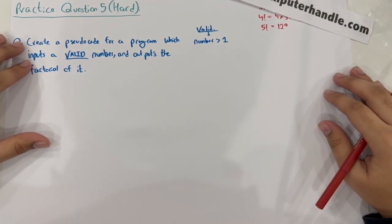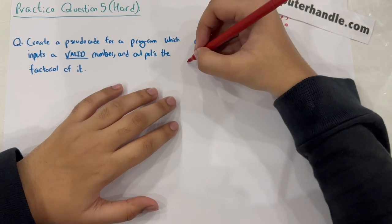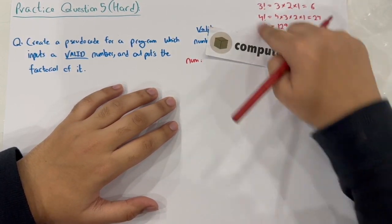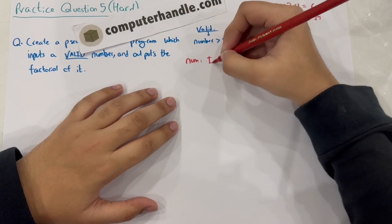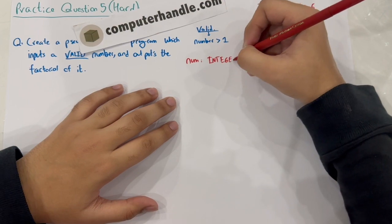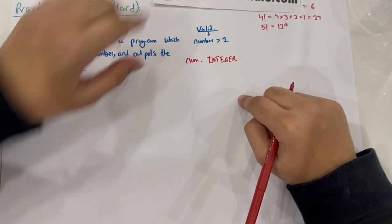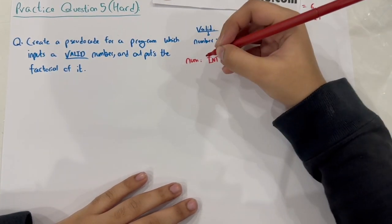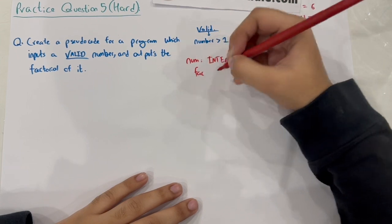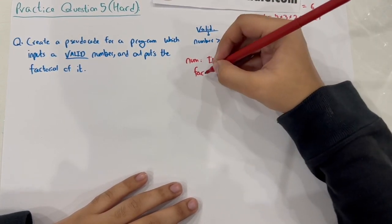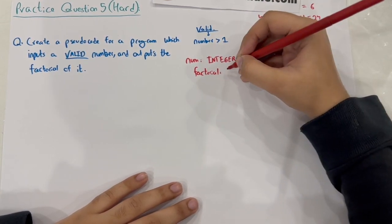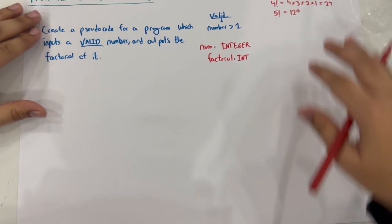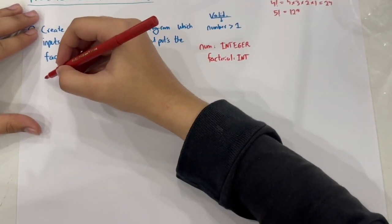The variables we will use are: num, declared as an integer — because factorial can only be calculated for integer numbers — and another variable called factorial, also declared as integer. We also have i for the for loop. Let's number down the lines. It's a relatively short program, but quite hard.